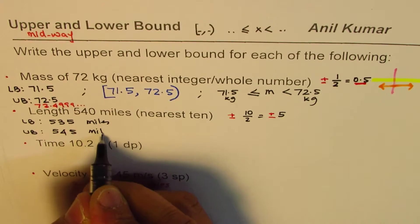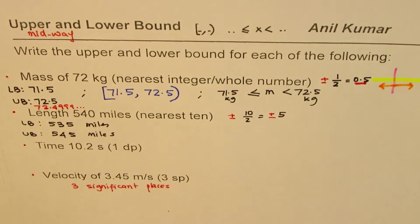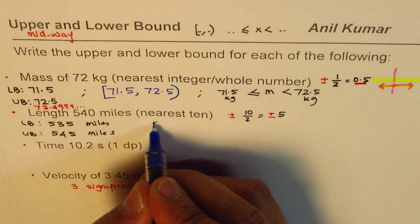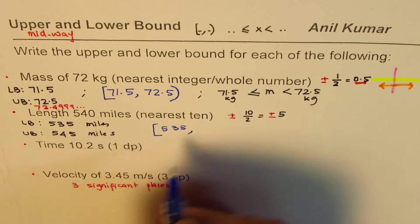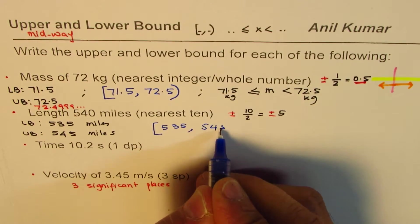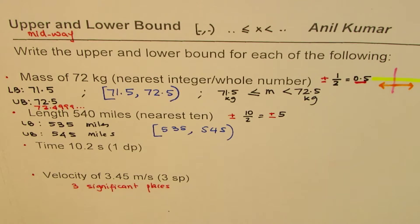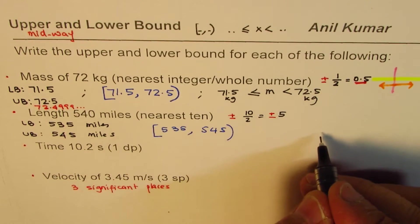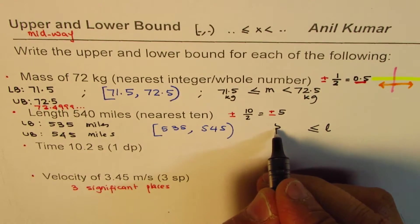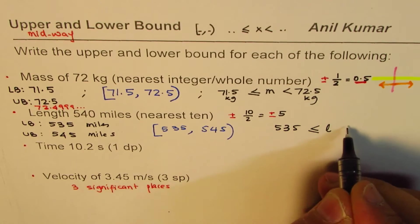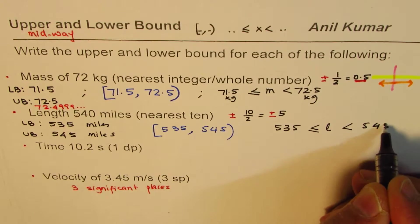In any of these nomenclatures you could always write this as you are including 535 miles but you are excluding 545, that's kind of a limit. Or in inequality terms you can say the length is greater than or equal to 535 but it's less than 545 miles.